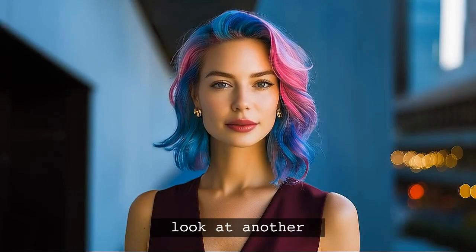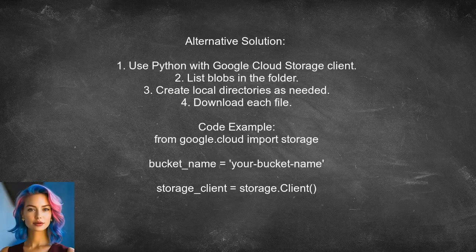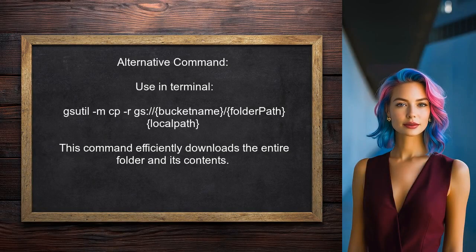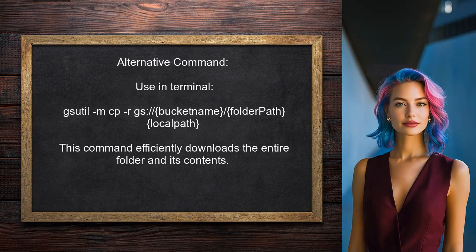Another answer involves using Python code to download an entire folder from Google Cloud Storage. They suggest using the Google Cloud Storage client library to list and download all files in the specified directory structure. Alternatively, you can use the gsutil command in the terminal to recursively copy a folder from your Google Cloud Storage bucket to your local machine.